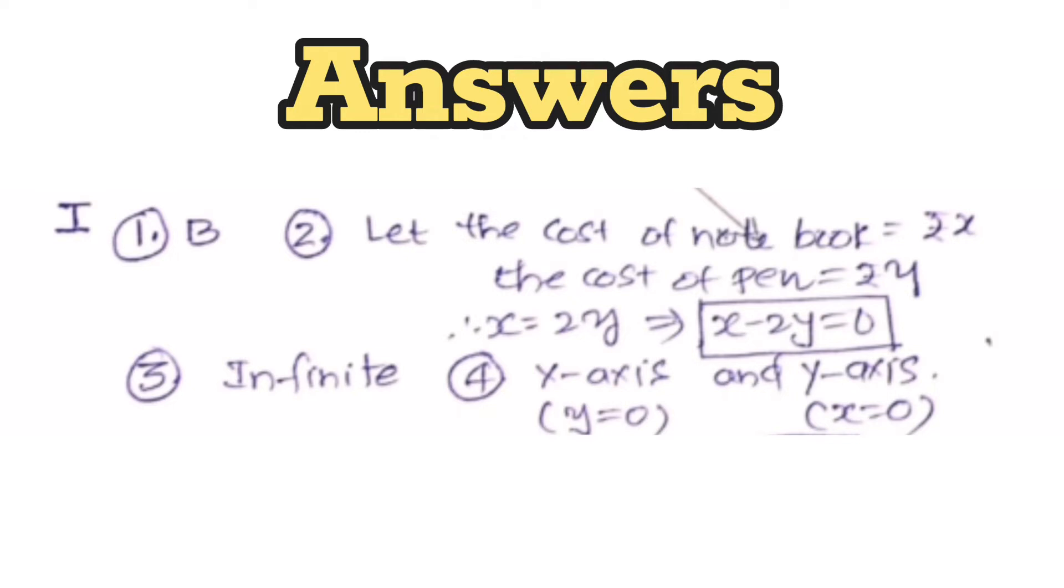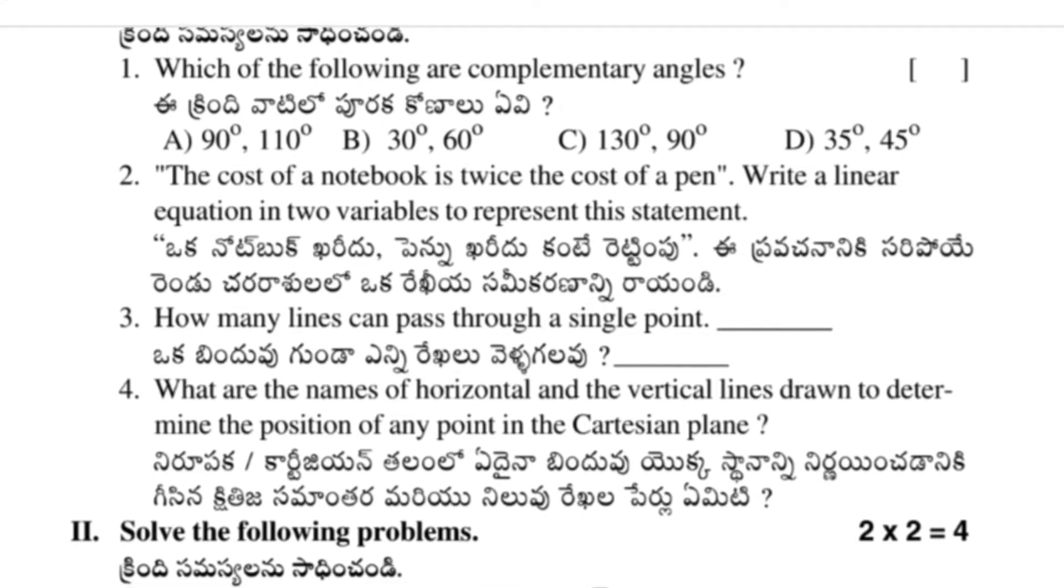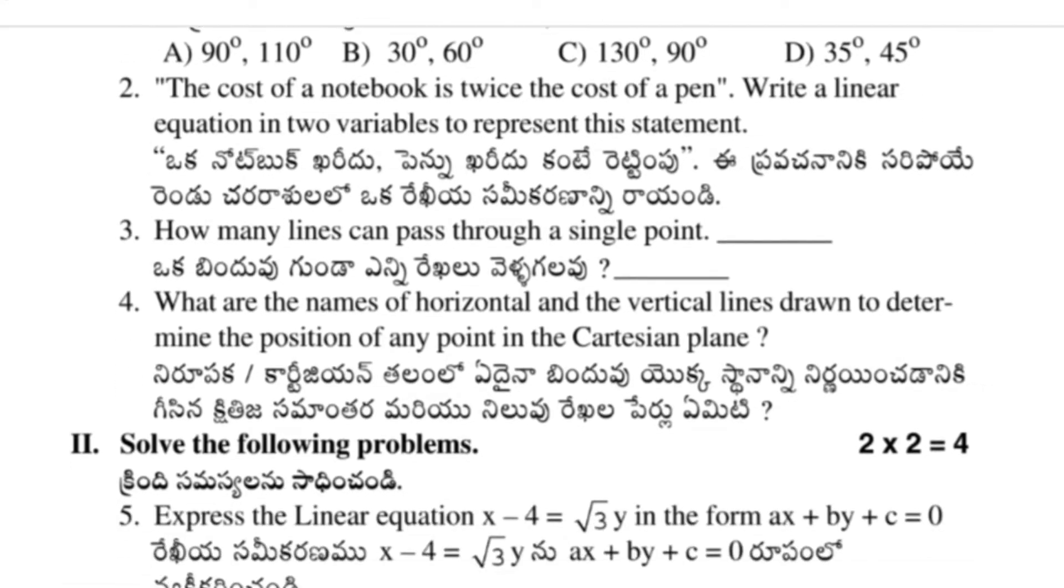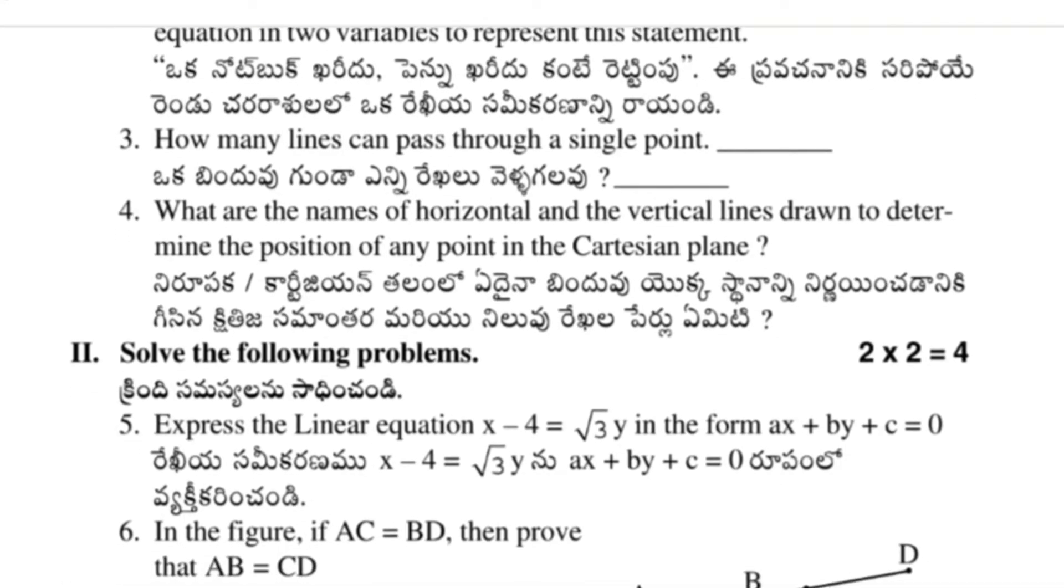This is the first section answers only. First answer is B, second answer you just check it out, third and fourth also. Then we'll move to the second section. Here also we have solve the following problems, two questions given, each question carries two marks—that is four marks total. Fifth and sixth questions.